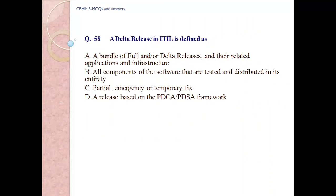Question number 58: A delta release in ITIL is defined as: A. A bundle of full and/or delta releases and their related applications and infrastructure. B. All components of software that are tested and distributed in its entirety. C. Partial emergency or temporary fix. D. A release based on PDCA/PDSA framework.